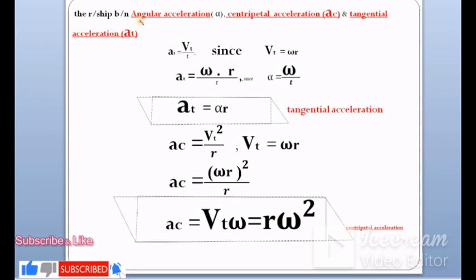Since vt = ωr, tangential acceleration at = vt/t = ωr/t = (ω/t) × r. Since α = ω/t, we get at = αr. This is the relationship between tangential acceleration and angular acceleration.